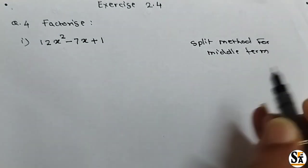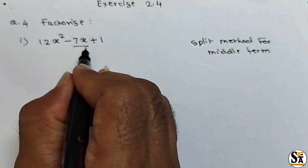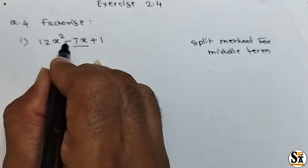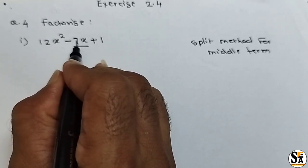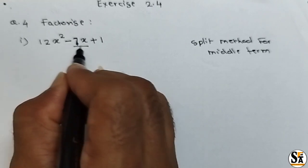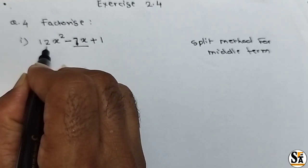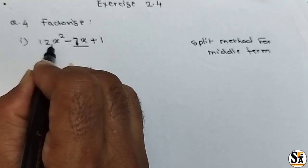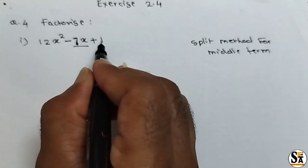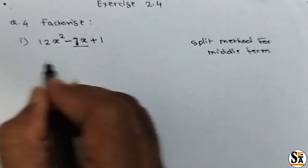In this method, we will split the middle term in such a way that its addition will equal the coefficient of the middle term, and at the same time, the multiplication of those factors will equal the product of the x squared coefficient and the last constant term. So here we will split the middle term.